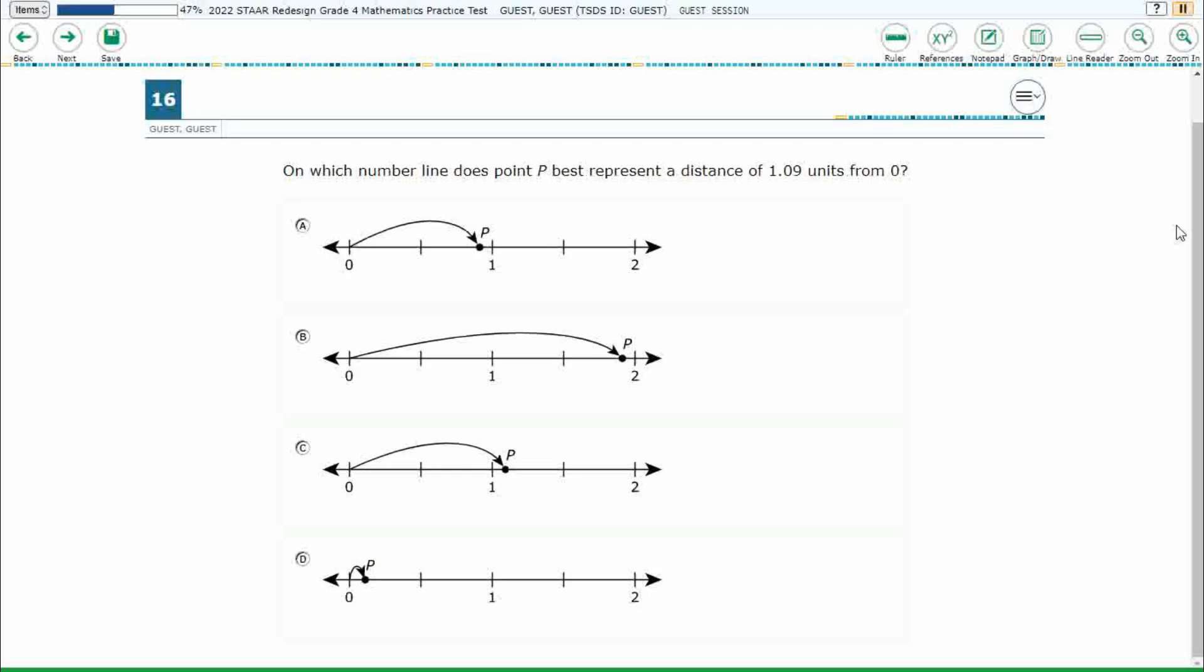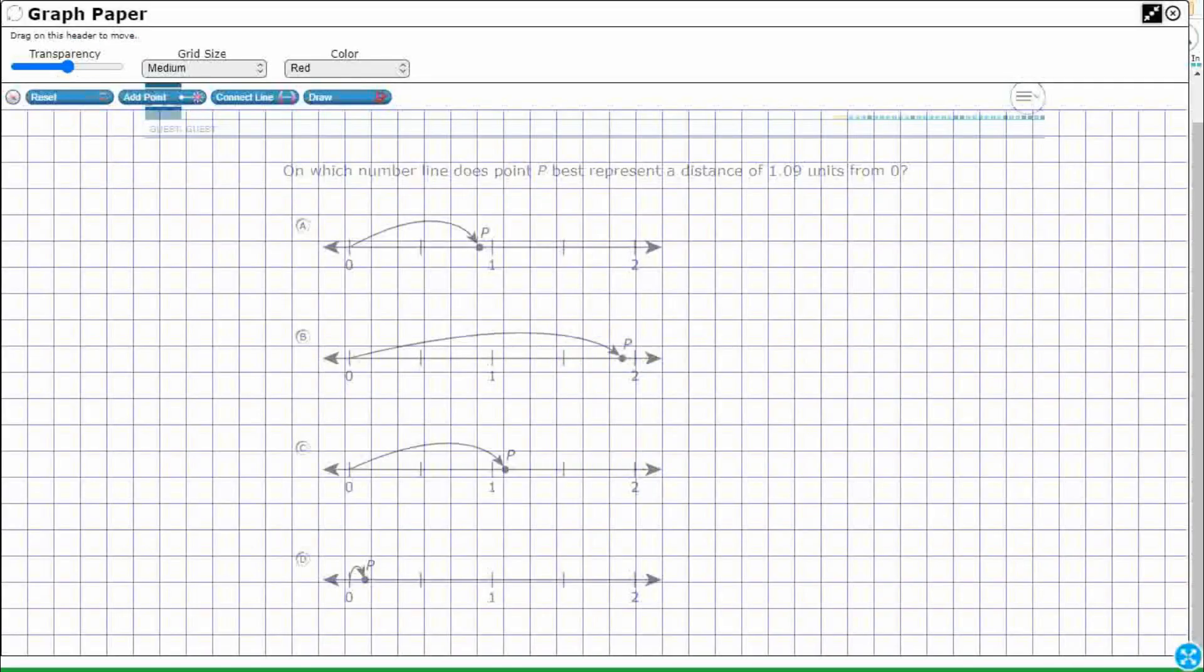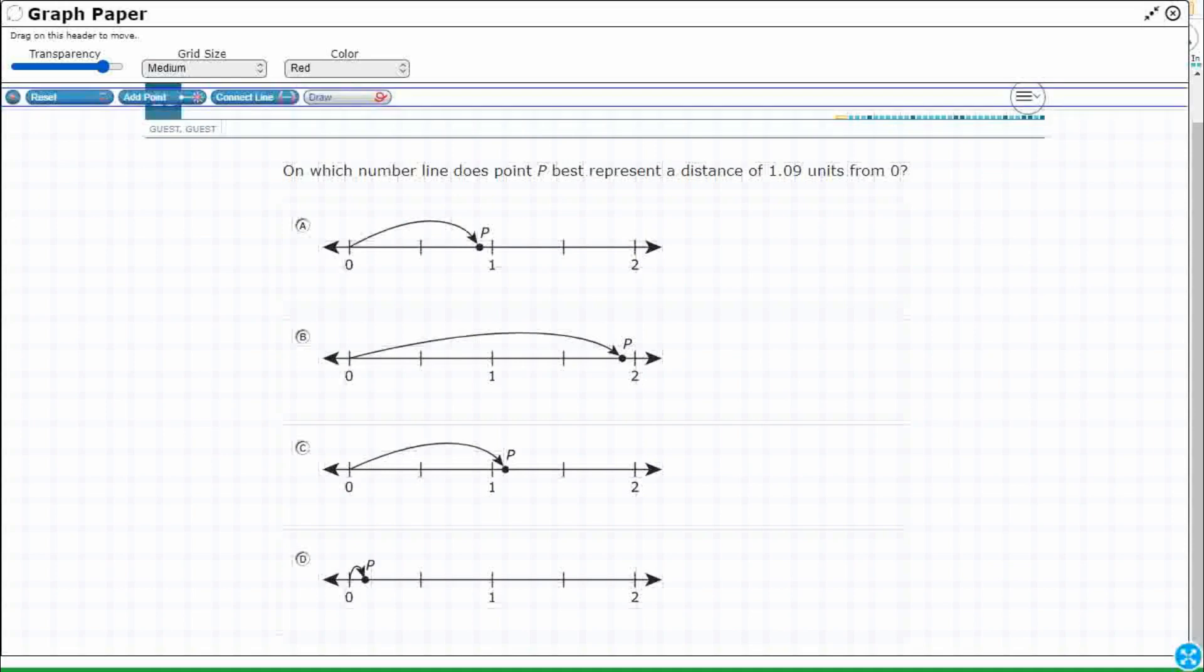So we are looking for point P best representing 1.09 units from zero. All right, so let's open up our graph draw feature, expand it out using those diagonal arrows, make it a little bit more transparent so I can see what's going on here. Let's click draw and we are ready to go.